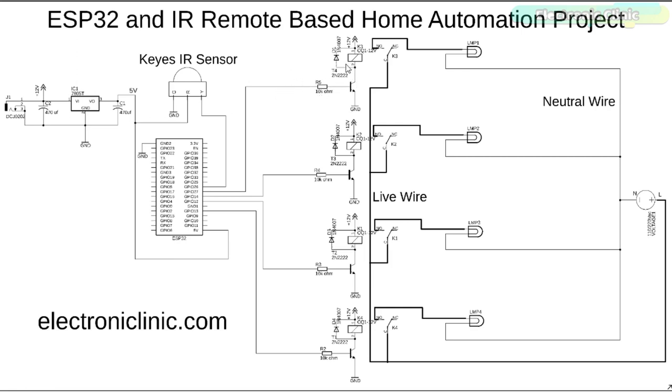Now to control these relays, you simply need to connect these 10 kilo ohm resistors with the ESP32 I/O pins. In this project I'm using the GPIO pins 13, 12, 14 and 27. I'll be using the same pins in the programming.